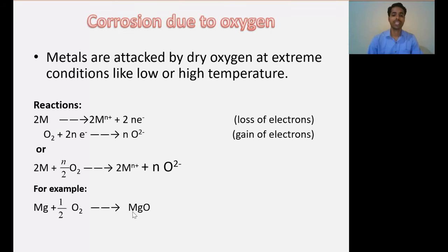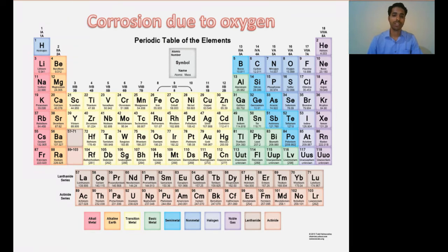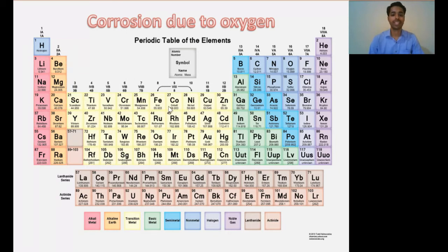The reaction always occurs on the surface of the metal. If you check the periodic table, group 1 and group 2 elements — alkali metals and alkaline earth metals — will preferentially get attacked by oxygen gas at normal temperature and will corrode at a faster rate. All other metals will also get corroded by oxygen but at somewhat higher temperatures.